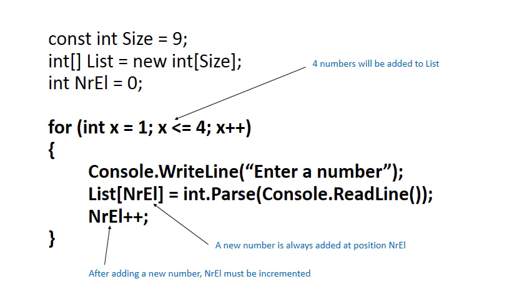And then as we also discussed previously, as soon as you've added a new element you must increment number of elements. So after this for loop number of elements will have the value 4 and there will be four elements in positions zero, one, two and three.